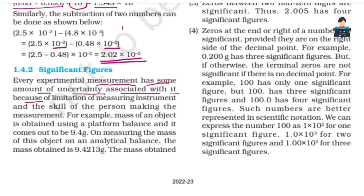Because of limitations of measuring instruments and the skill of the person making the measurement. So, every experimental measurement has some amount of uncertainty associated with it, because of the limitations of the measuring instrument and the person's skill in making the measurement.